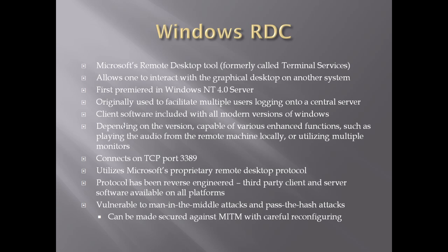The out-of-the-box configuration for Windows RDC is vulnerable to man-in-the-middle attacks because it doesn't do full authentication on each side, though Microsoft has documentation on how to lock it down. It is also still vulnerable to a pass-the-hash attack: when authenticating, it sends a hashed version of the password using a one-way hash function. Since the server knows the password, it creates its own hash and compares the two. But if you can sniff the session as it starts and capture the hash, you can use that hash to log in without ever knowing the actual password.